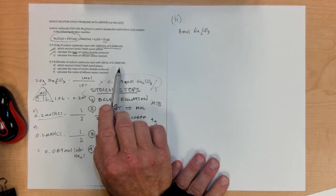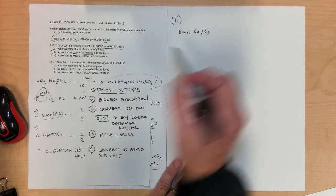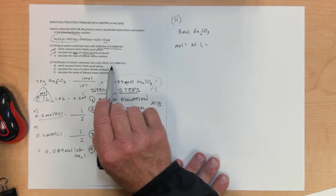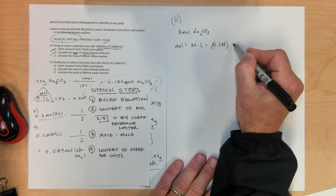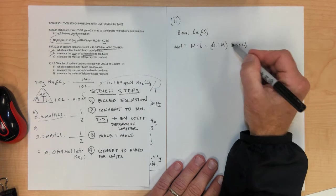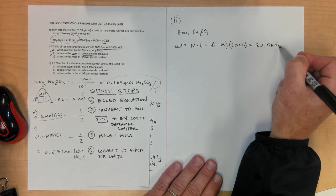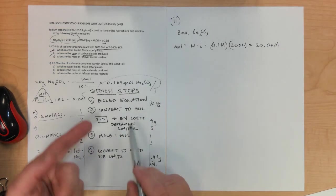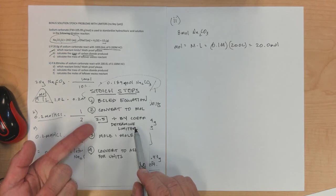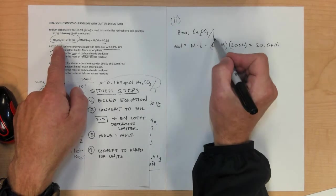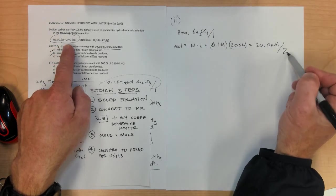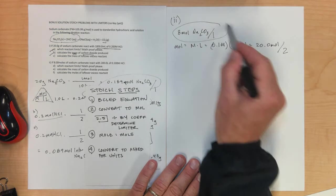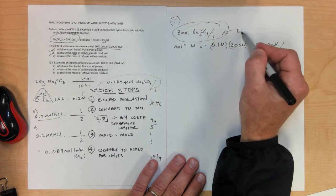For 200 liters of 0.1 molar HCl, use the molarity triangle: moles equals molarity times liters, so 0.1 times 200 equals 20.0 moles of HCl. To determine the limiter, divide by the coefficient: Na2CO3 is 8 divided by 1, HCl is 20 divided by 2. Since 8 is smaller than 10, Na2CO3 is the limiter — that answers question letter D.